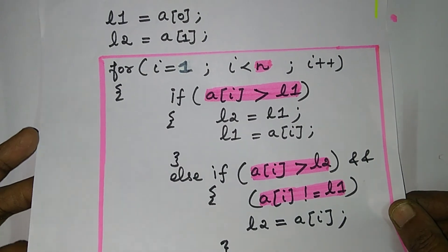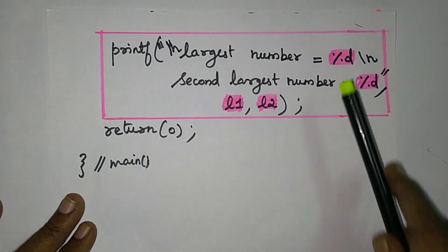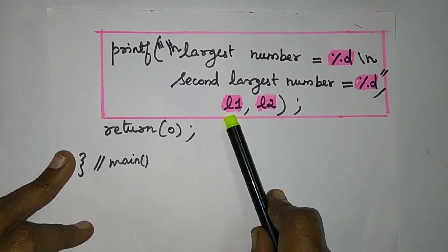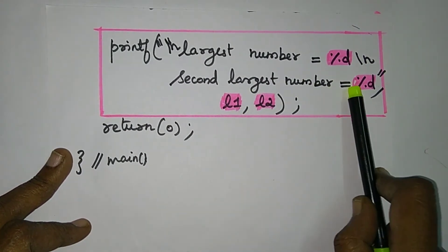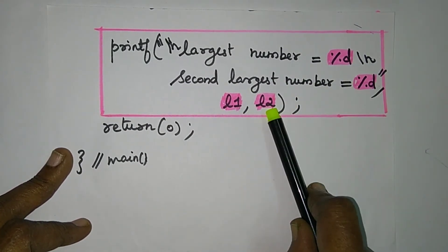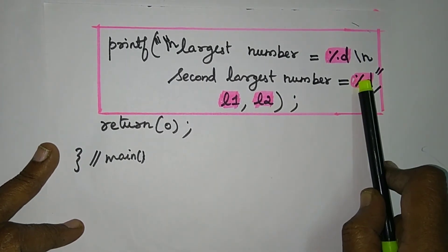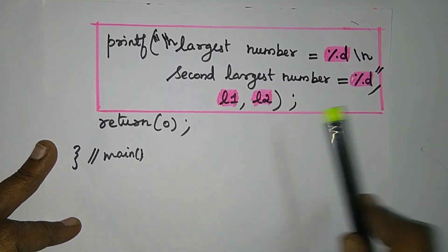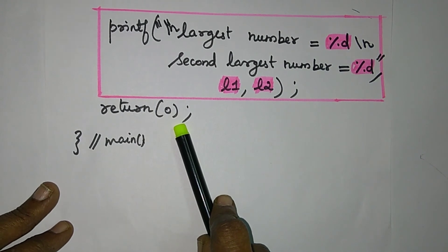We will print out the result. The answer is L1 and L2. Print the statement: largest number equal to L1. New line. Second largest number equal to L2 — the answer is the same. The second largest value is confirmed correct. The last statement is the return 0 function.